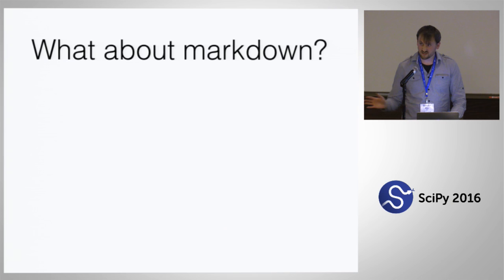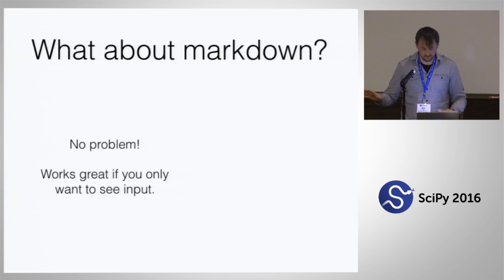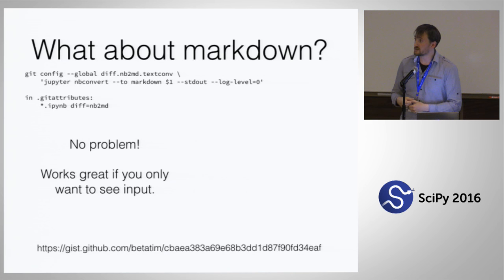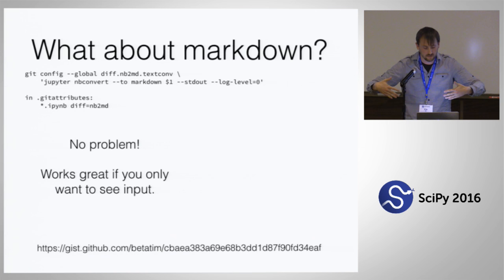Another aside: if you just care about the input, using markdown to view diffs is also totally fine, and you can do the same thing with git diff drivers — you can preprocess files to convert them to markdown with NB Convert, and then when git diff shows you that, it'll show you the markdown version of two files. Tim Head has posted about this on Twitter, and it works fine — just a couple lines of git configuration.